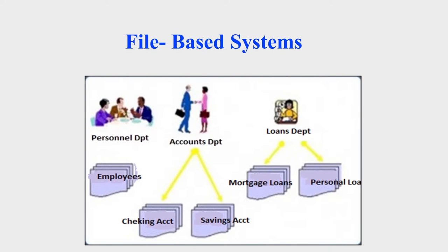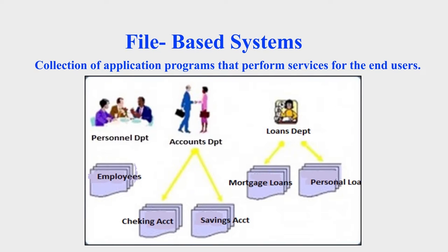This is the end of part one where we were introduced to database systems. Now we are going to part two, where we will learn about the systems that were used before the advent of databases. File-based systems were being used before the advent of databases. As you can see in the diagram, there are several departments within a bank — an accounts department, a human resources department, and a loans department — each with their own file systems. The issue is that information stored by one department is also stored in another department without being related or shared within the same organization.